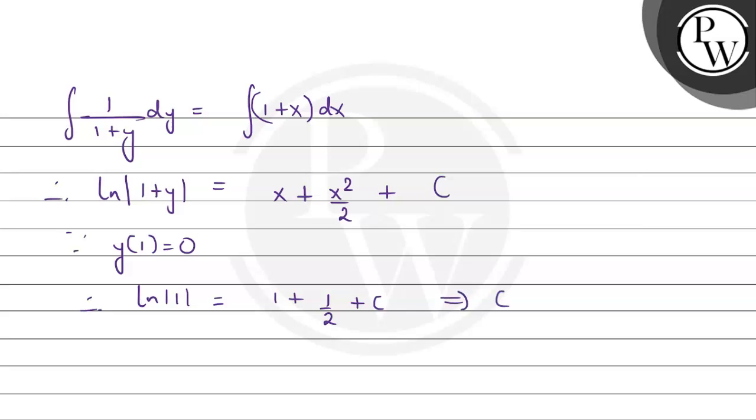Therefore, C = -3/2. So finally, the solution is ln|1 + y| = x + x²/2 - 3/2.